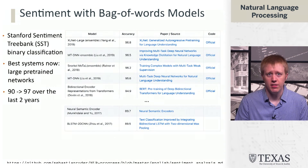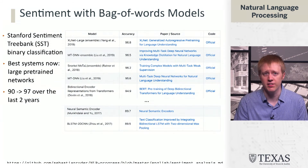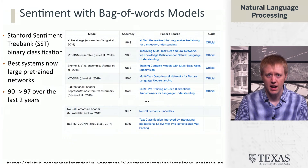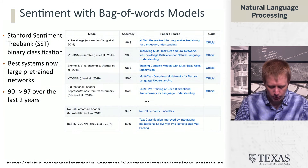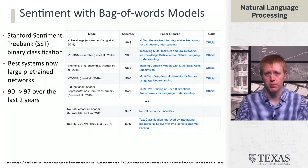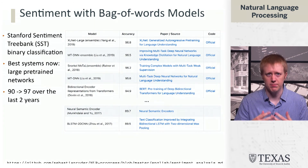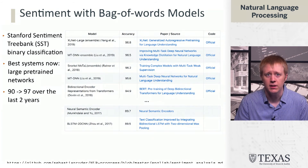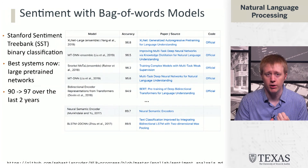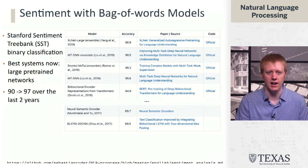Looking at where we are today on the NLP Progress website, which tracks state-of-the-art on different datasets, specifically the Stanford Sentiment Treebank, the best systems now use large pre-trained models like BERT and XLNet, which we'll cover later in the course. These have really pushed performance substantially — from LSTMs getting around 90% to the best pre-trained models getting almost 97%. This underscores how far you can get with basic classifiers, and how much the idea of pre-training is going to buy us.